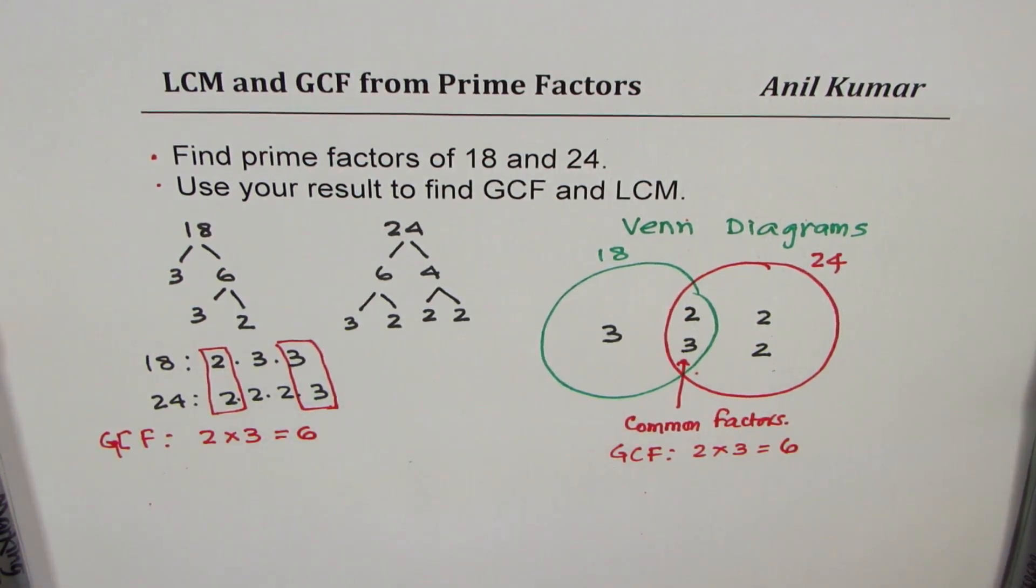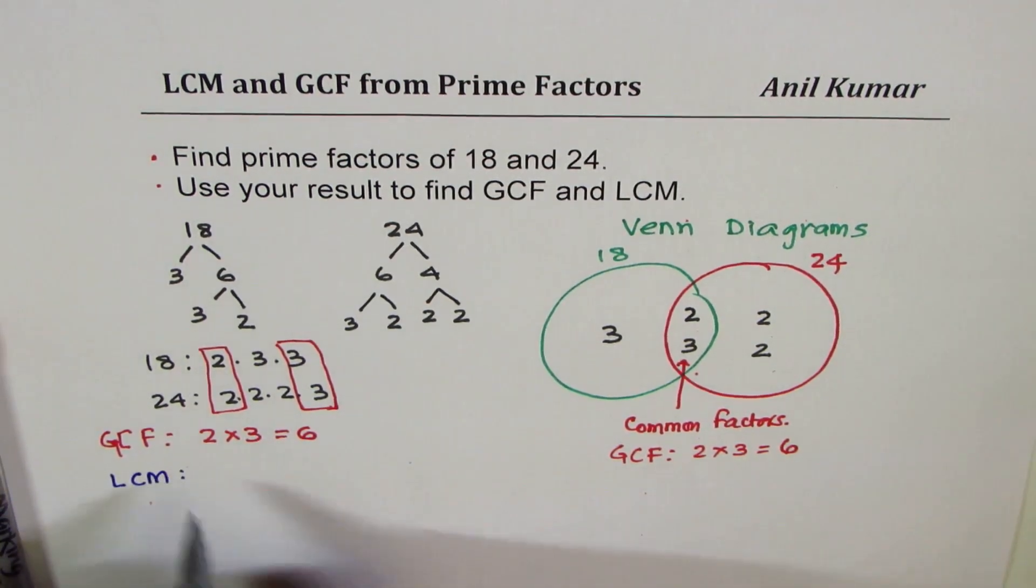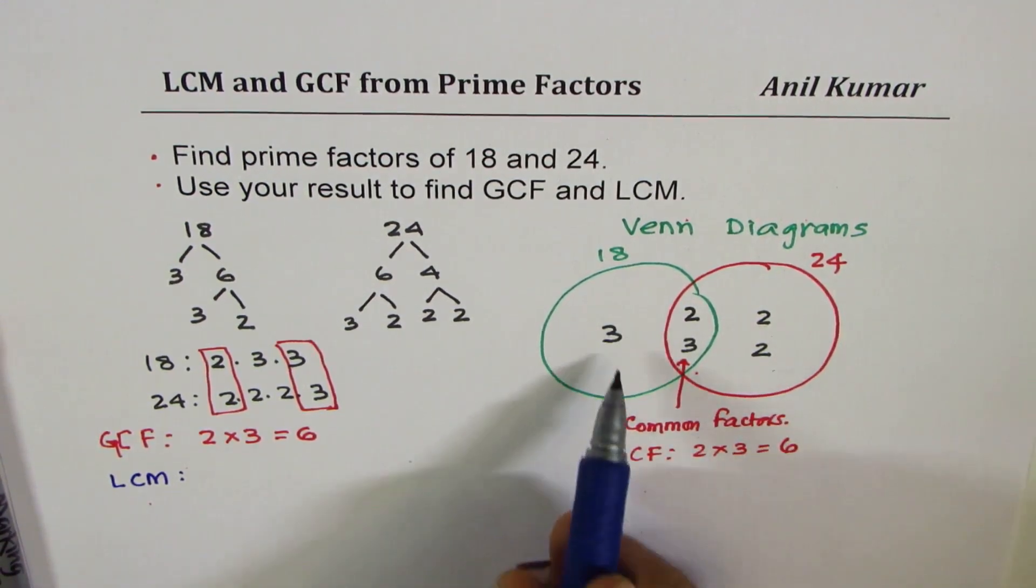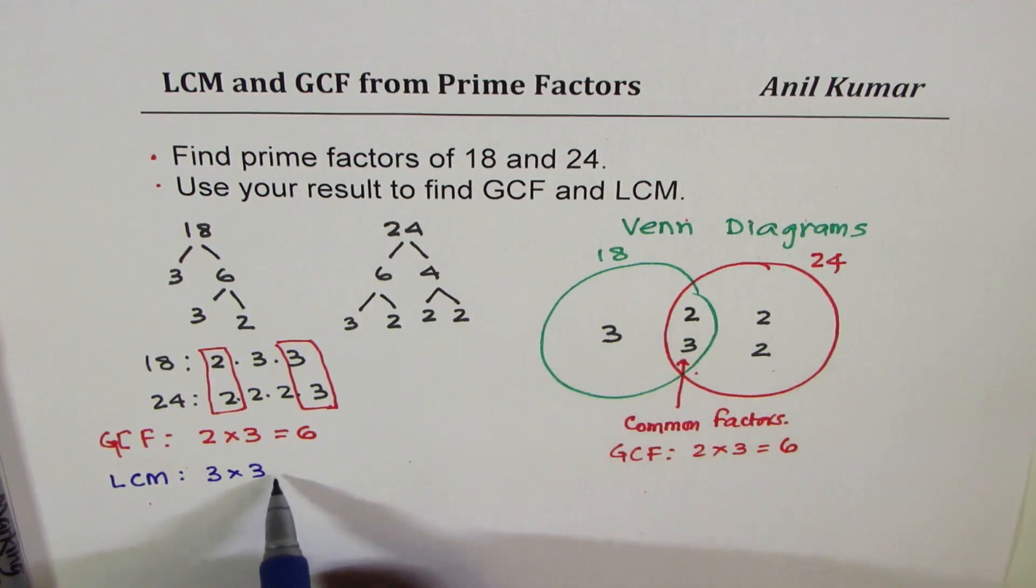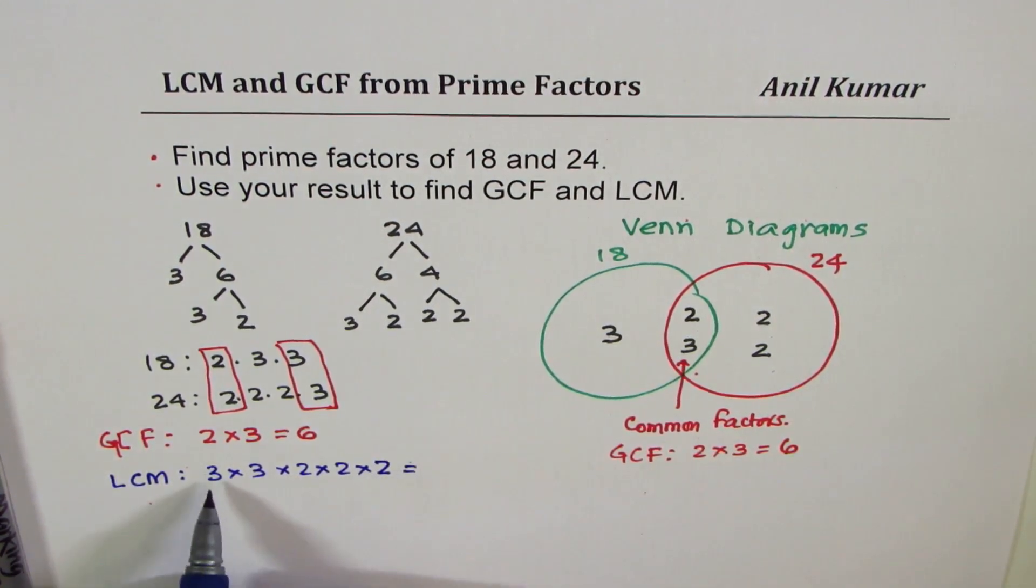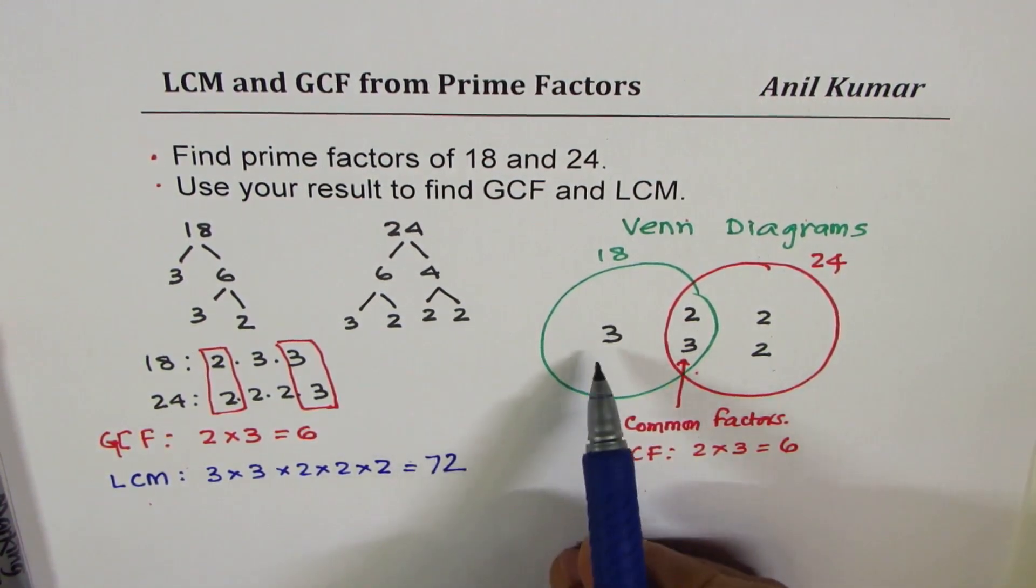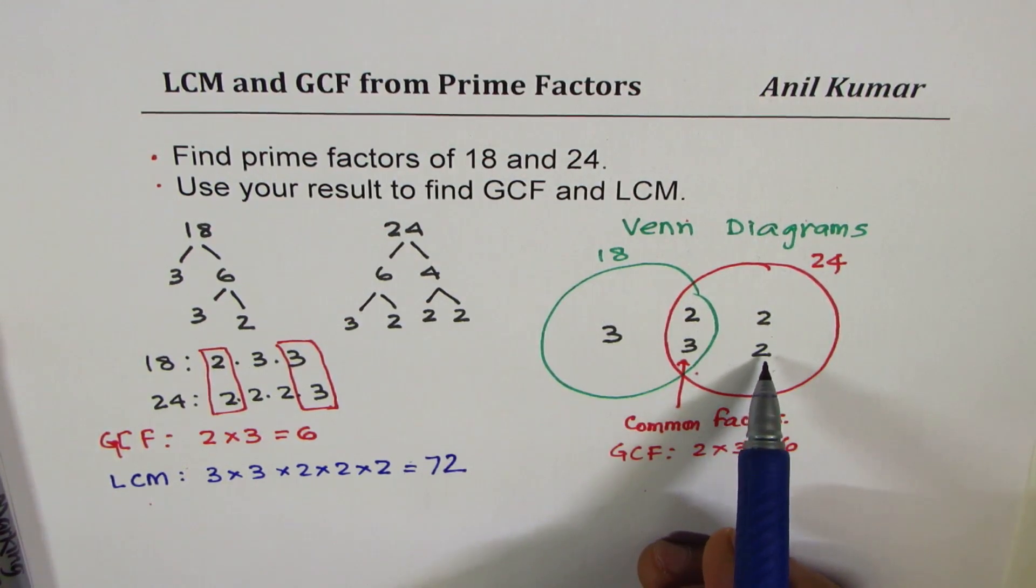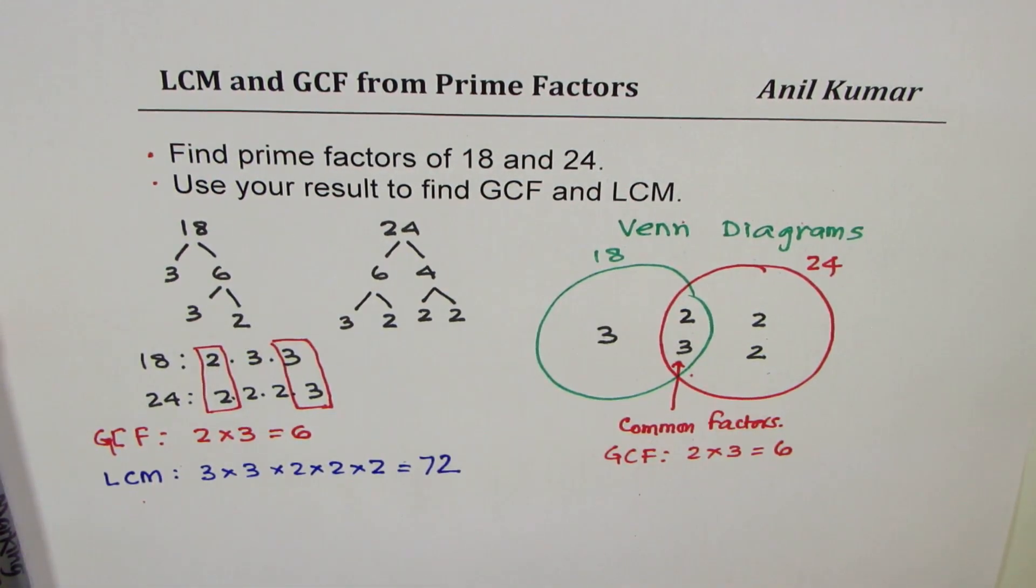The least common multiple now can be calculated very easily by just multiplying these terms. So what we get here is 3 times 3 times 2 times 2 times 2, which is 9 times 8, 72. So when you multiply all these prime factors, you get least common multiple. Is that clear? So that is how you do it.